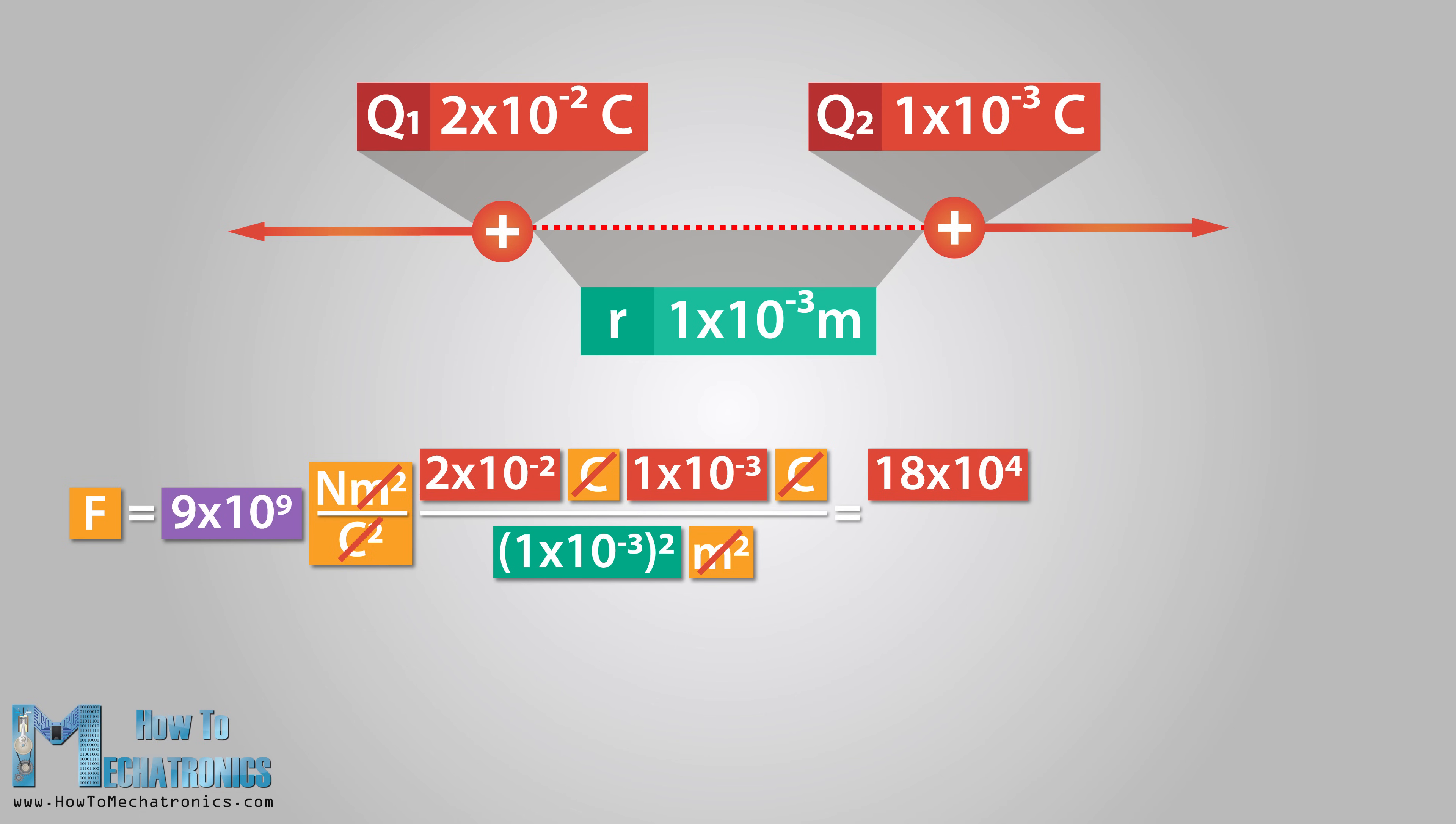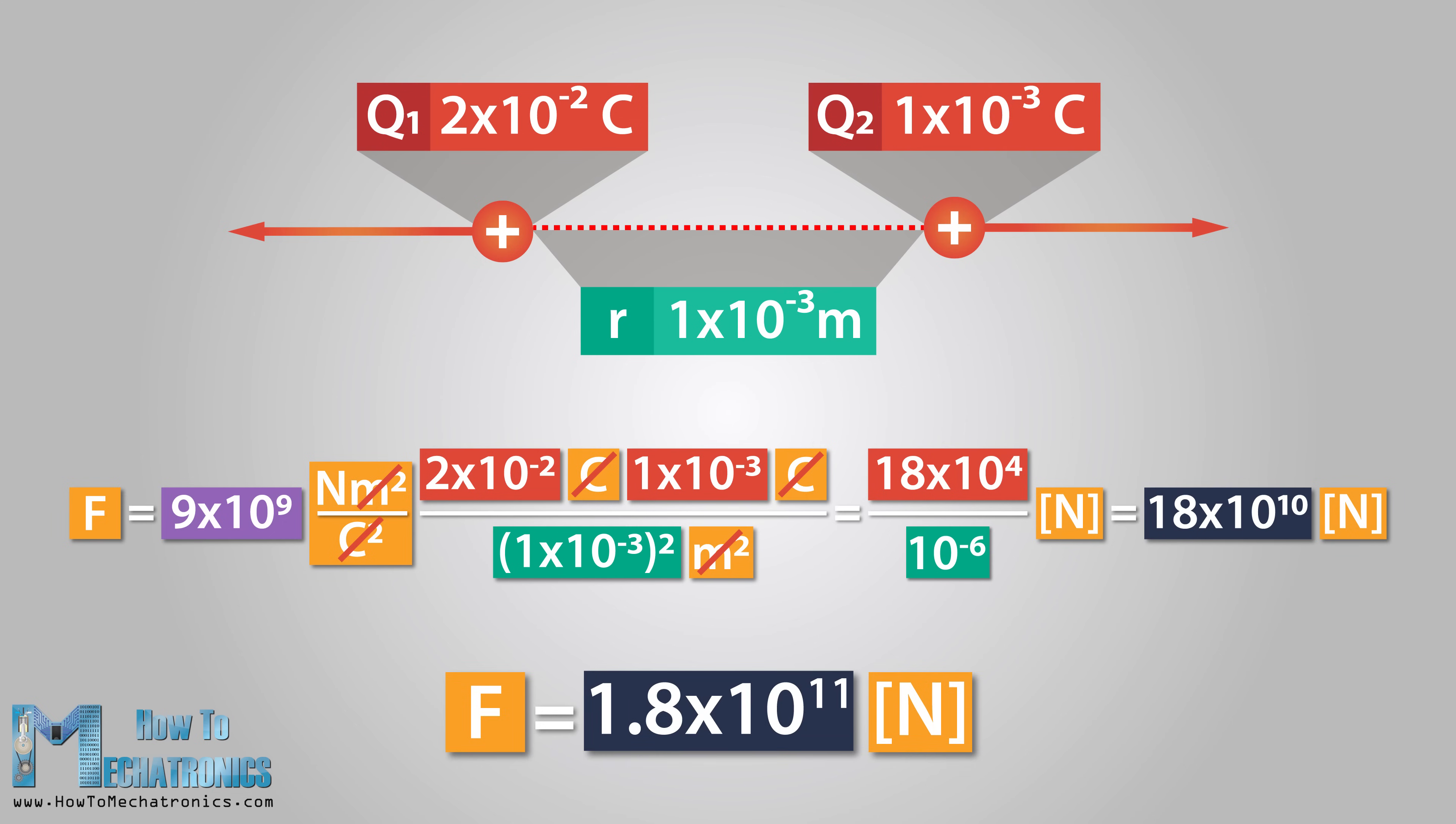This is 18 times 10 to the 4th divided by 10 to the minus 6th, which is 18 times 10 to the 10th newtons. We got a positive result, meaning that the charges repel one another. In case we had one positive and one negative charge, we would get a negative result, which means that they would attract one another.